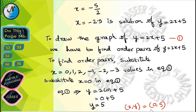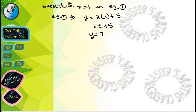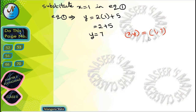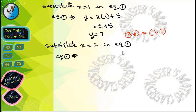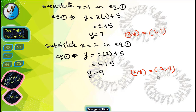Next, substitute x = 1 into equation 1: y = 2×1+5 = 2+5 = 7. The ordered pair is (1, 7). Next, substitute x = 2: y = 2×2+5 = 4+5 = 9. The ordered pair is (2, 9).